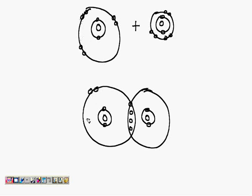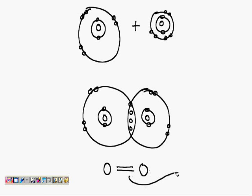These 4 electrons in the middle remain as they are with no change. There were 6 electrons in the first oxygen atom, plus 2 electrons from the second oxygen atom — total becomes 8. Similarly for the second oxygen atom: 6 plus 2 equals 8. Since there are 4 electrons in between, this is known as a double bond or a double covalent bond.